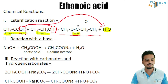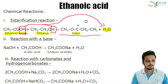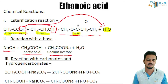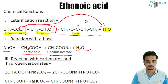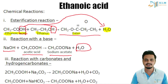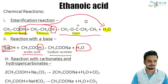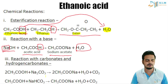The second reaction acetic acid undergoes is with a strong base such as sodium hydroxide. Acetic acid reacts with NaOH to give sodium acetate — the sodium salt of acetic acid — and water. The H in acetic acid is substituted by sodium from NaOH, and the remainder forms the water molecule.